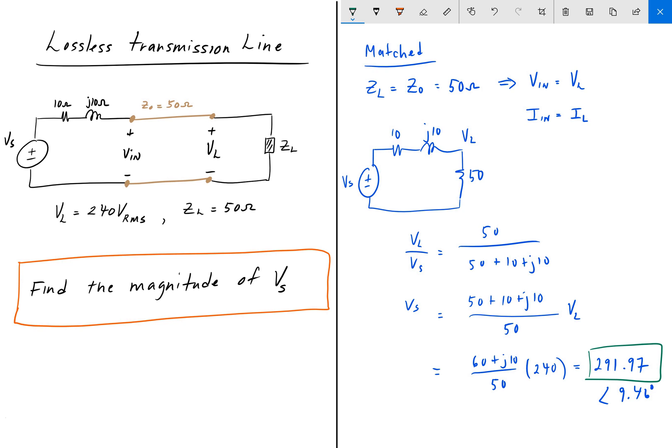The important thing to remember from this problem is that anytime the transmission line is impedance matched, meaning that the load impedance is equal to the characteristic impedance Z0, we get that the input voltage is equal to the load voltage and the input current is equal to the load current. That simplifies the problem and makes it a simple voltage divider.